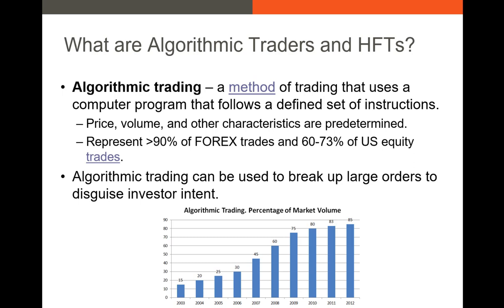There are a couple of reasons why algorithmic traders exist. The biggest one is that algorithmic trades can be used to break up large orders to disguise investor intent. For example, if you're trying to get a 5 to 10 percent stake in Nvidia over the next month, you don't want to buy several million shares at once. Instead, you'd break up trades over time — maybe buying 100 shares in the next minute, 500 shares five minutes later, sending some orders to dark pools and some to lit exchanges.